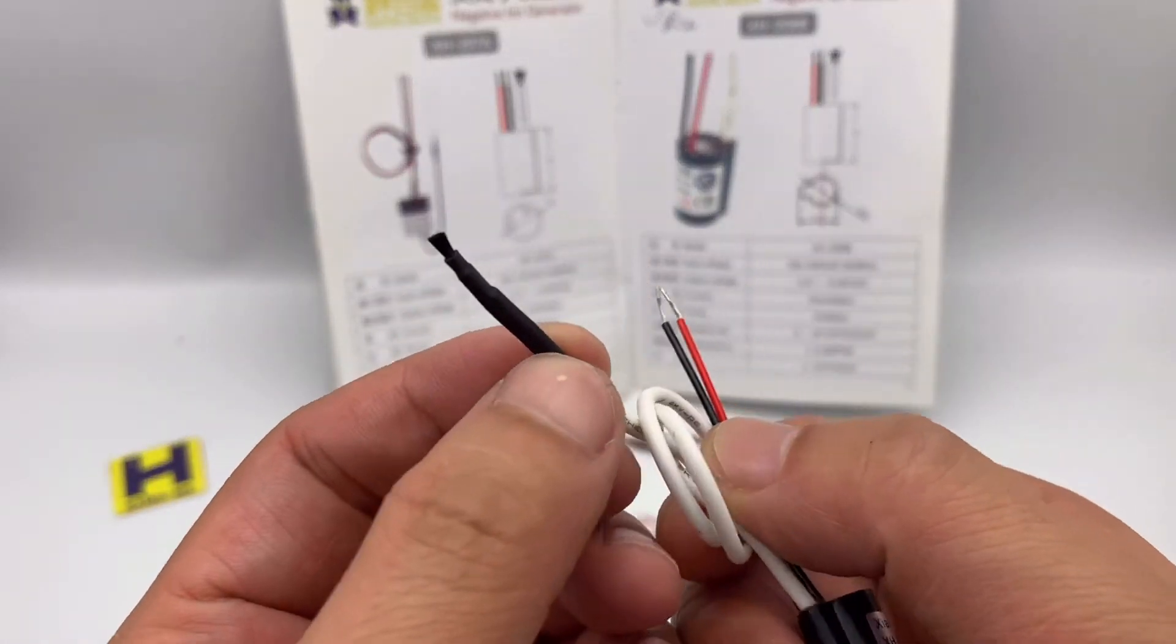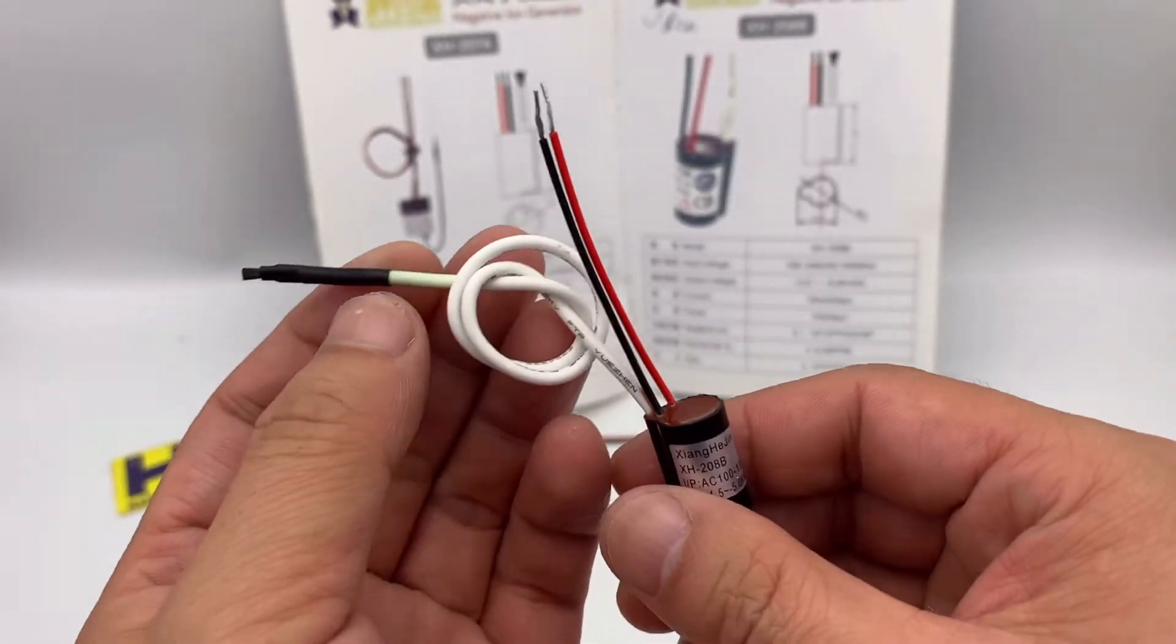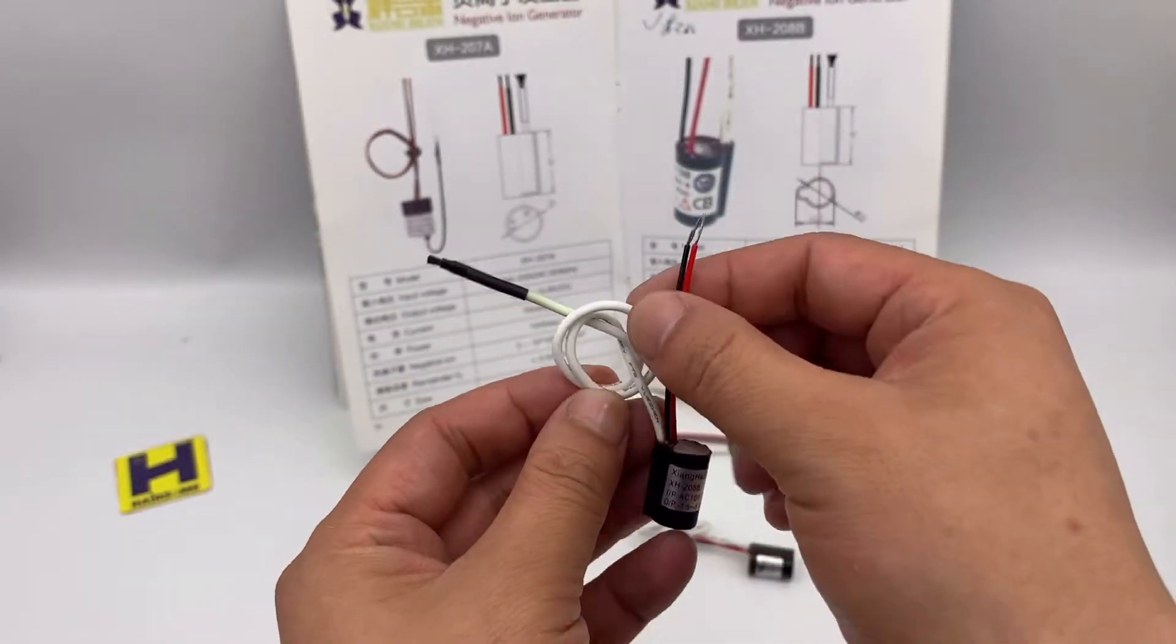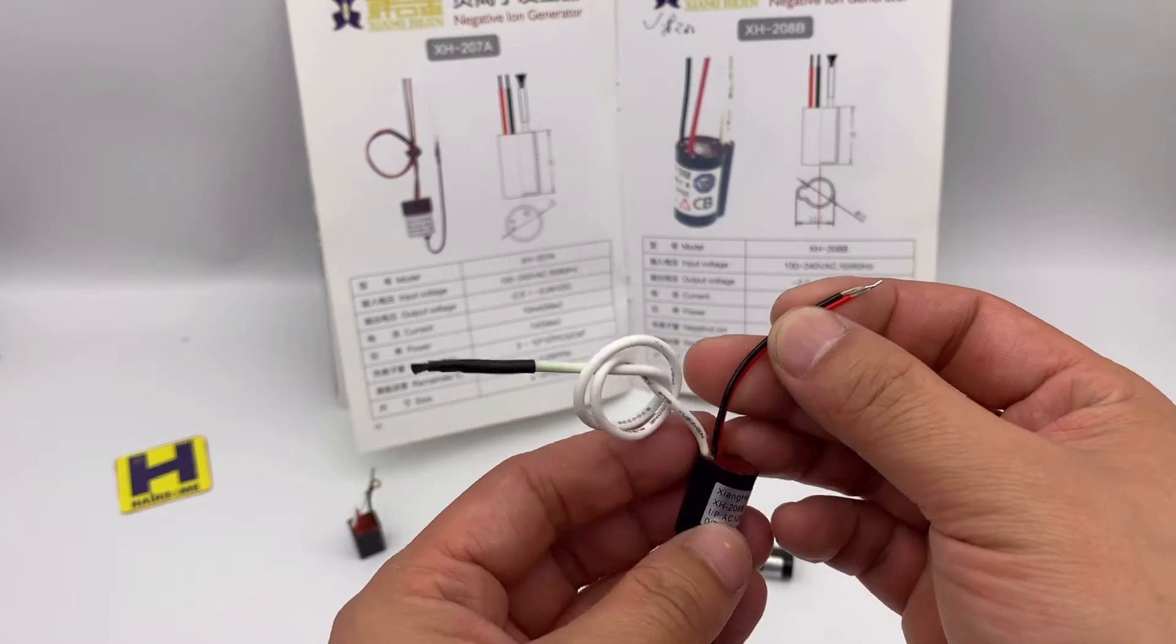This is a brush, this is carbon brush. This is very common use in a hair dryer.